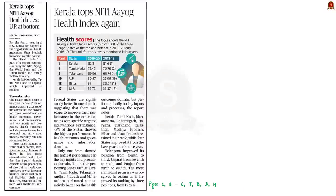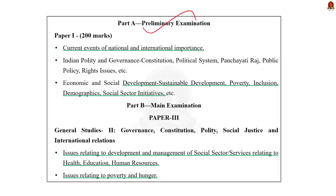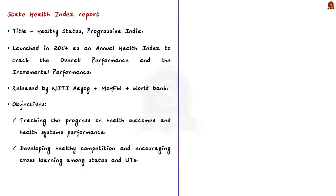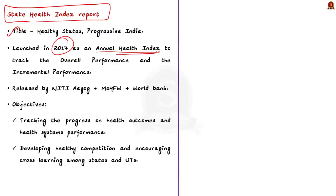The first news article is about the release of the State Health Index report for 2019-20 by Niti Aayog. Today we will see about this index, its key indicators and its findings. The syllabus relevant to this news article is given here for your reference. This State Health Index report is officially titled 'Healthy States Progressive India.' It was launched in 2017 as an annual health index. Incremental performance means year-to-year progress, while overall performance means the current performance.